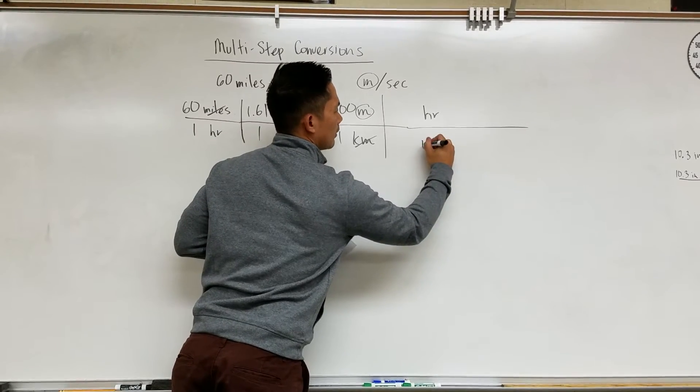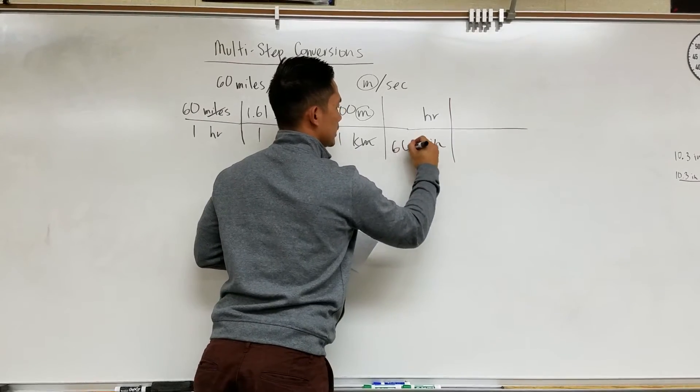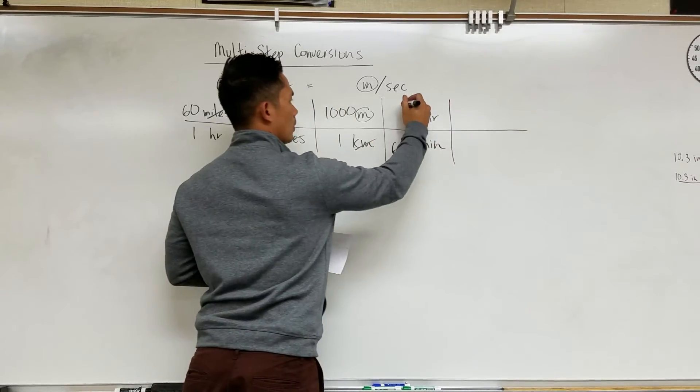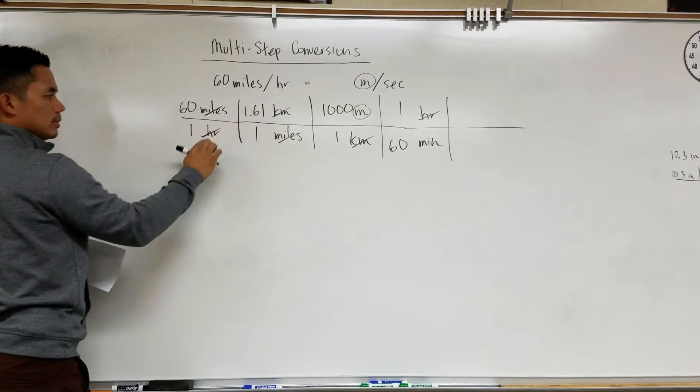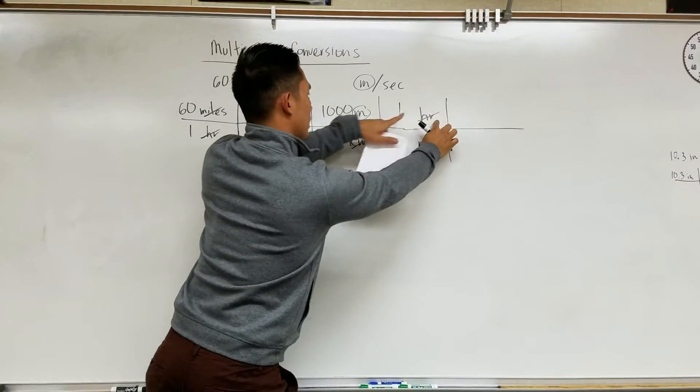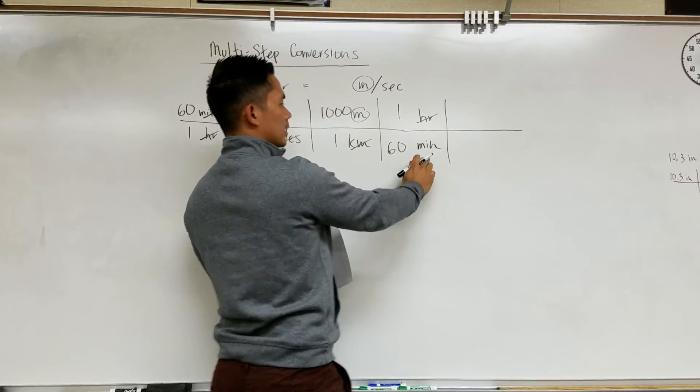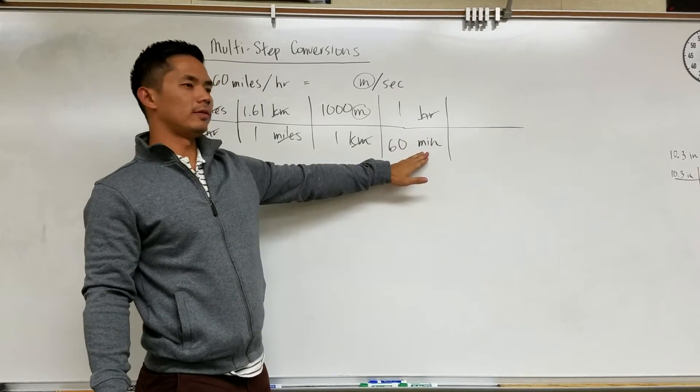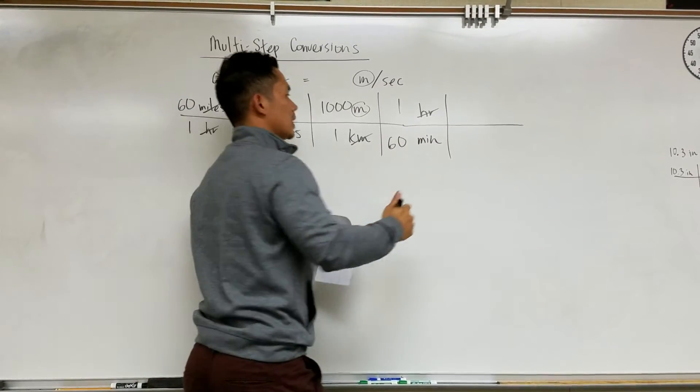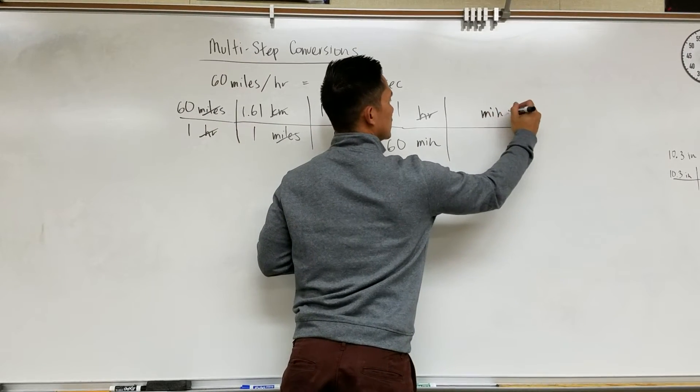So I'm going to write minutes here. 60 minutes in one hour. So now the hours will cancel. Now I have minutes. If our question asks for minutes then we would be finished. But it doesn't. It asks for seconds. So I need to take one more step and write minutes on top.